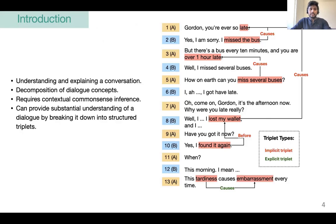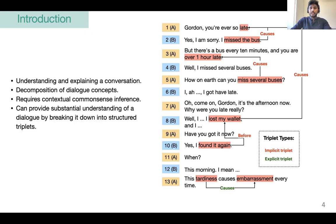Understanding and explaining a conversation requires the decomposition of dialogue concepts such as entities, events, and actions, and also connecting them through definitive relations. The process of breaking down a dialogue into such explanations is grounded in the conversational context and often requires common sense inference. If we express the explanations in the form of knowledge triplets, as shown in the figure on the right, it can describe the common sense relation through which the concepts are related. For example, we have instances of causal, temporal, and other kinds of common sense relations. Our goal is to explain a dialogue using these common sense triplets.